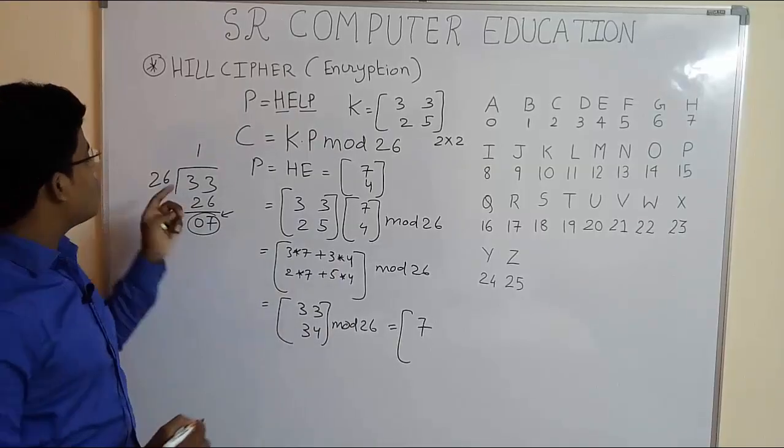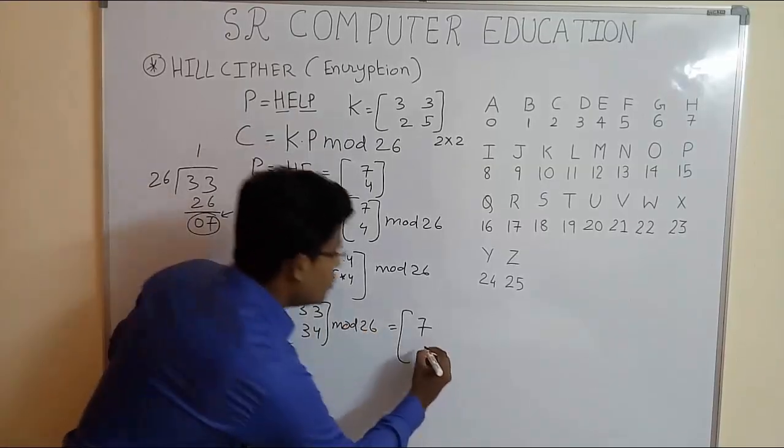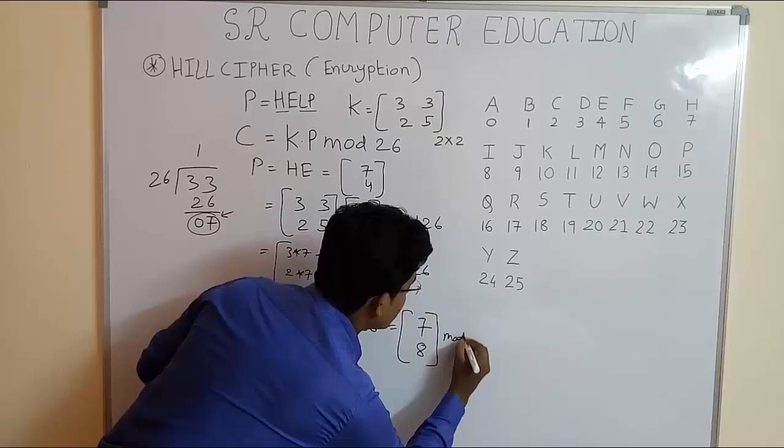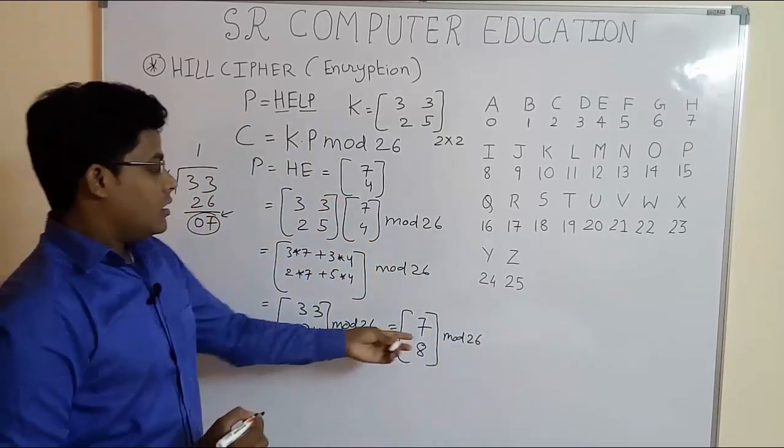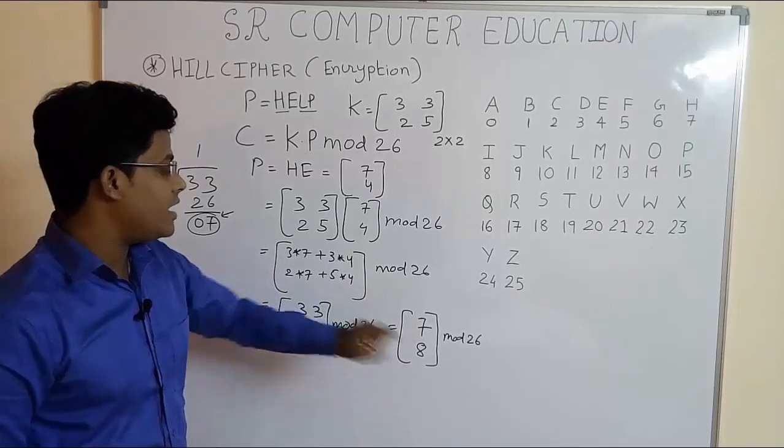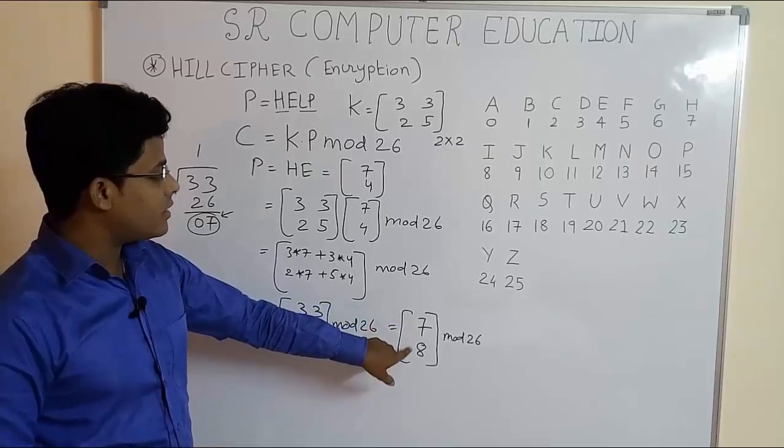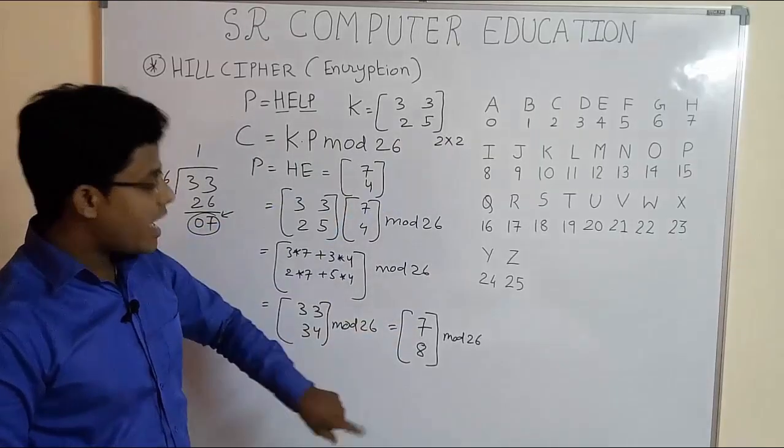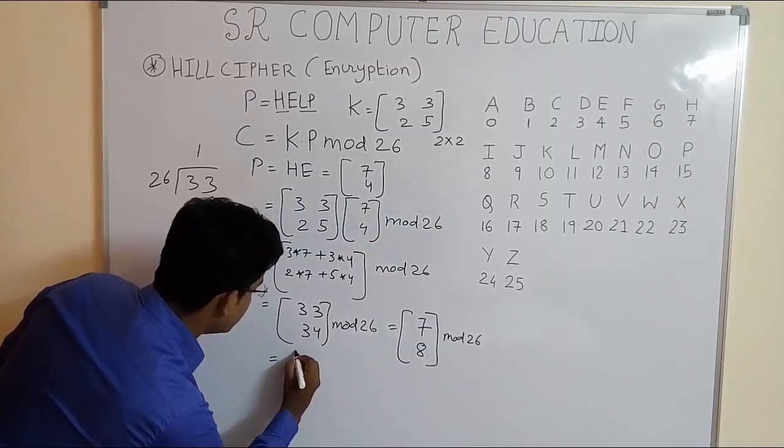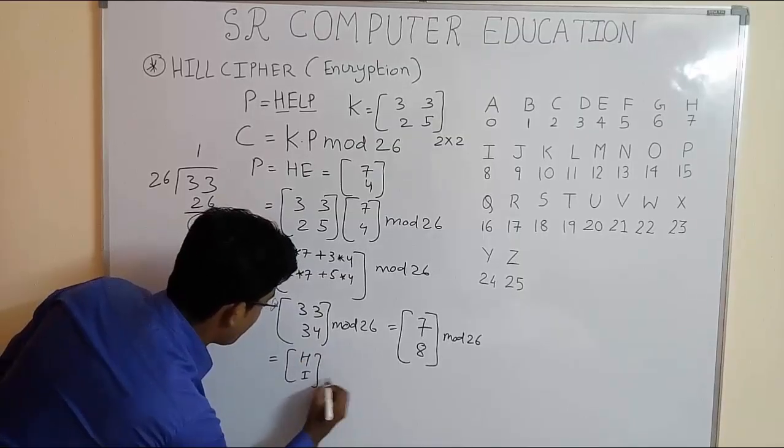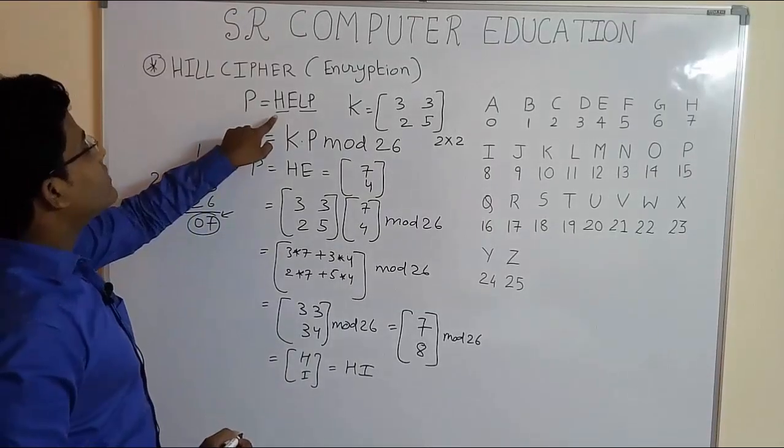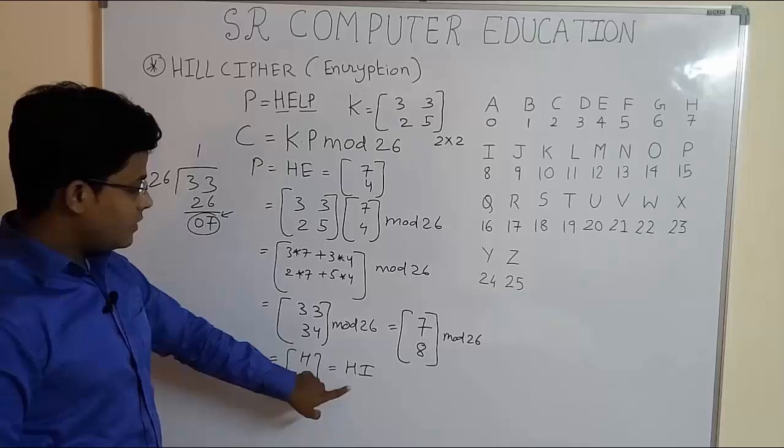And similarly, 34 mod 26 when you do, you get answer 8. You have to write here mod 26 again just to represent that these two numbers are in mod operation. So your answer is 7 and 8. Now write the equivalent alphabet associated with 7 and 8. 7 is H and 8 is I. So the ciphertext for plaintext HE is HI.